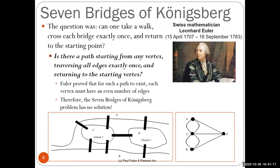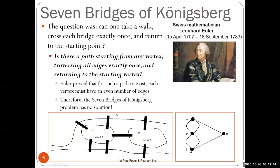The problem Euler tried to solve was: can one take a walk, cross every bridge exactly once, and return to the starting point? Stated as a graph problem: is there a path starting from a vertex, traversing all edges exactly once, and returning to the start? Euler proved that for such a path to exist, every vertex must have an even number of edges. Since A has three edges, C has five, B has three, and D has three, the seven bridges of Königsberg problem has no solution.